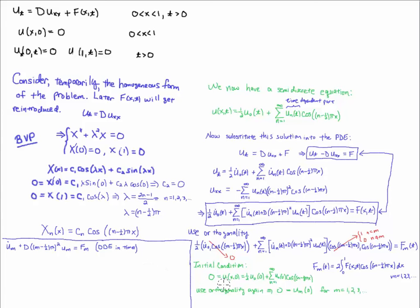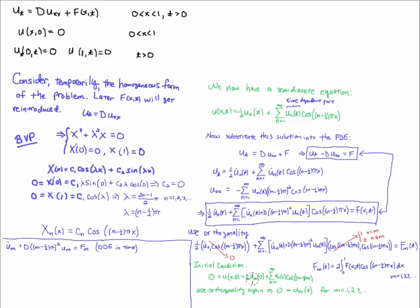For the initial condition, we use u(x,0) = 0. Plugging zero into our Fourier series solution and applying orthogonality again — taking the inner product with cosine_m — the cross terms vanish, leaving u_n(0) = 0. This gives the initial value for each ODE in time.